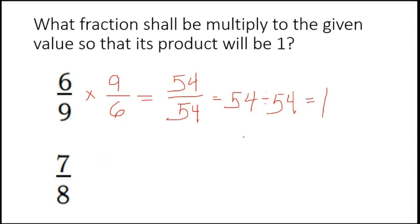A number divided by itself is always equal to 1. Next, this one, 8 over 7. So this is 56, and this one is 56. So the answer here is 1.